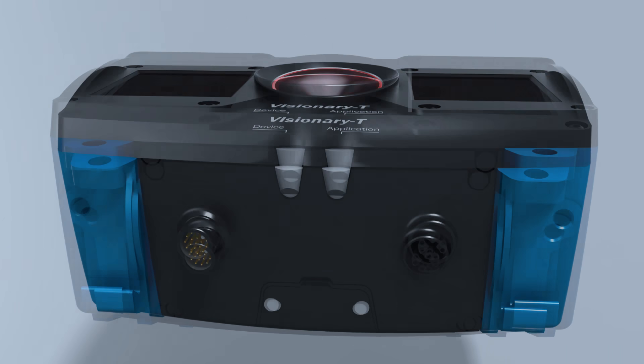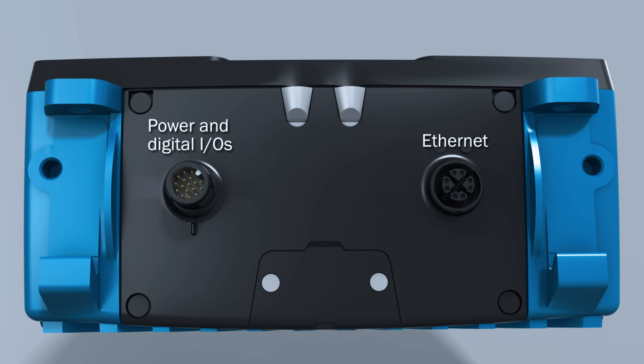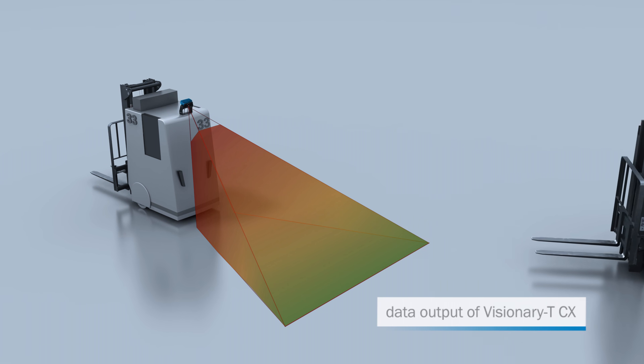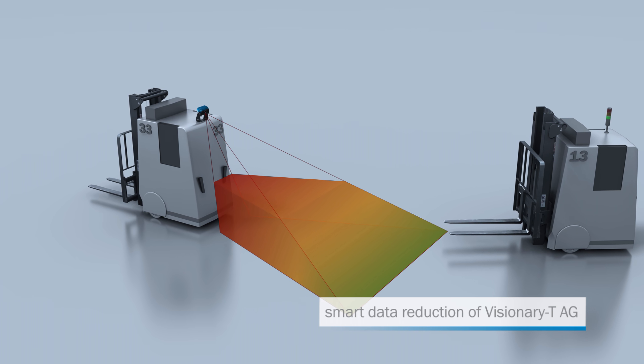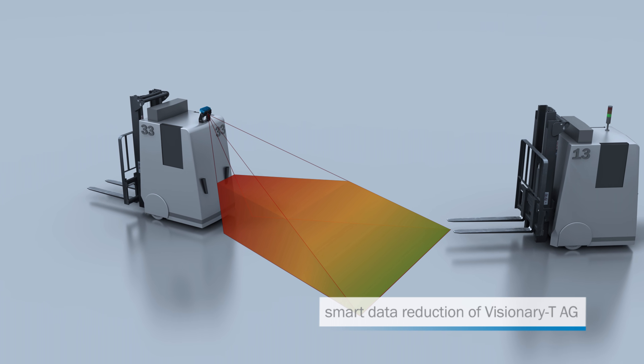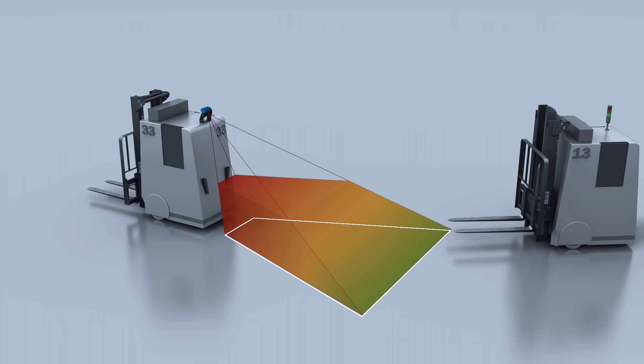Data and power connections are based on the bottom of the sensor. The streaming camera Visionary T CX delivers raw 3D data. In addition, the smart Visionary T AG can allow evaluation of the 3D data on the device.